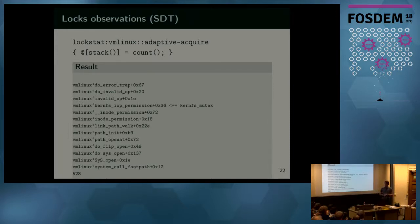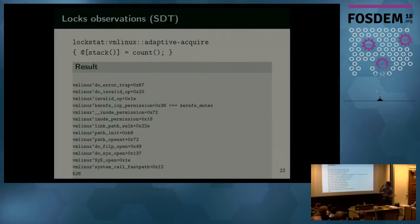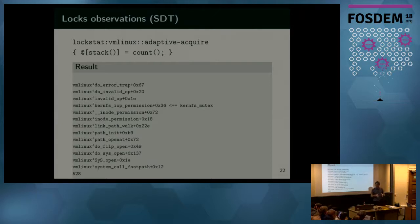Work on D-trace is not only about the tracer, because there are well-known statically-defined probes across many operating systems. For example, this one-liner uses the lockstat provider for every adaptive mutex acquire in the Linux kernel, collects all stacks, and counts them to show the hottest stack — who successfully acquired a mutex during the time I was running the one-liner. The best thing is it works on macOS and Solaris too, because we add the SDT providers in the same way. That's the point of our work: to truly add Linux to the family of operating systems.